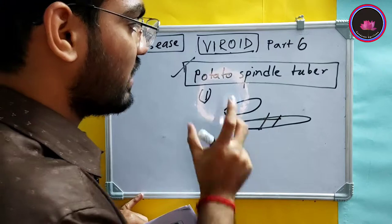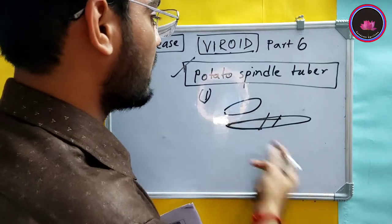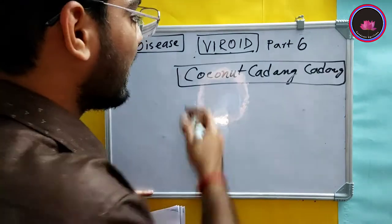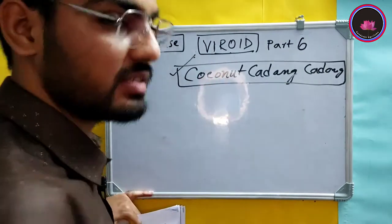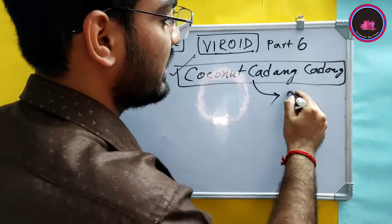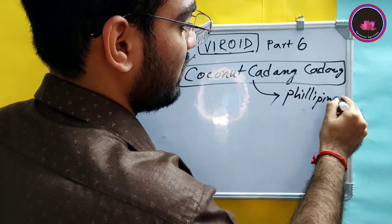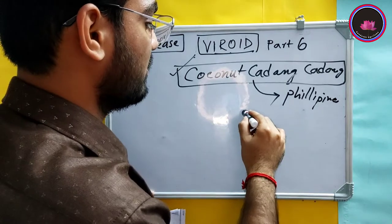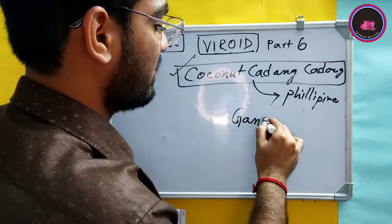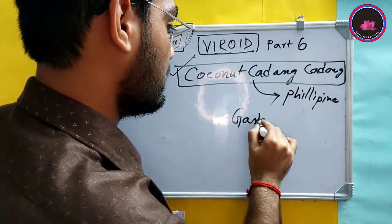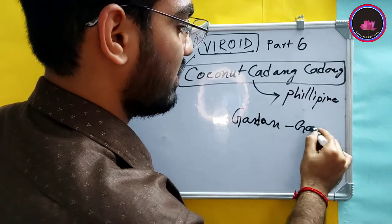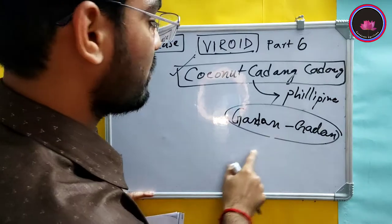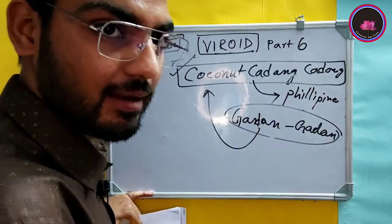That is the main important symptom of potato spindle tuber. Now, the coconut cadang-cadang symptom is interesting because it is mainly seen in the Philippines. In the Philippine language, 'cadang-cadang' means 'killing,' which is how the disease got its name.